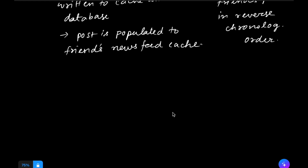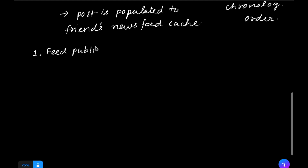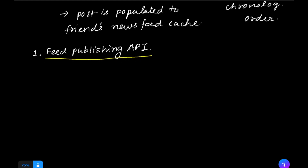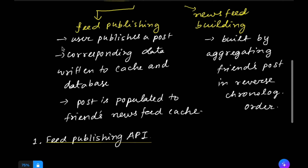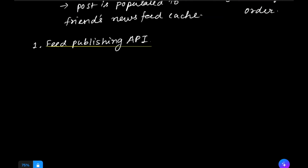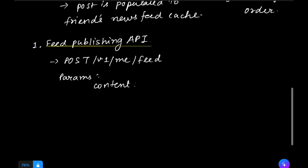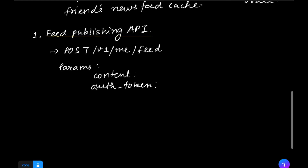We look into two main APIs. The first is the feed publishing API. When a user publishes or posts something, we use a POST request — for example, POST v1/me/feed — and the parameters we pass are the content and the authorization token. Content holds the text of the post and other related materials, while the authorization token is used to authorize valid clients posting on the application.